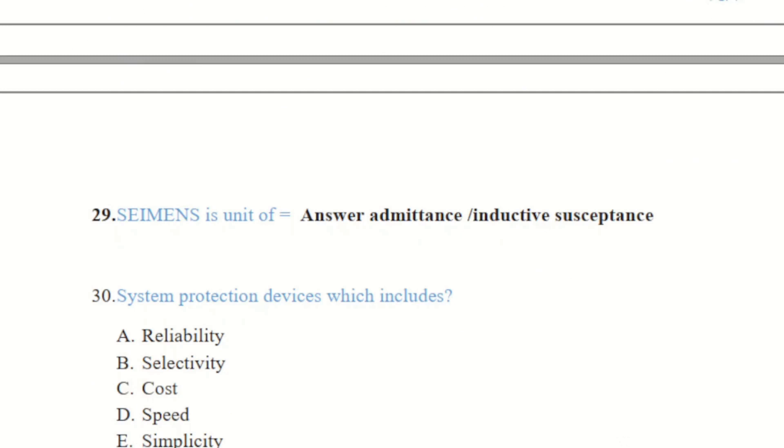Question number 29 is asking about the unit of the Siemens. The answer is admittance or inductive susceptance. Both can be the option. Whatever the option will be given to you, you have to just select both of them.